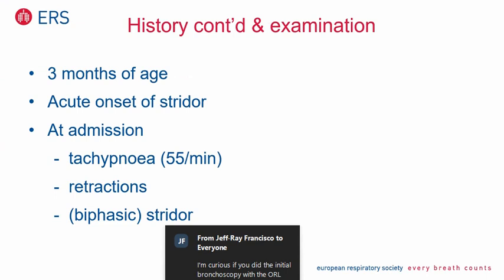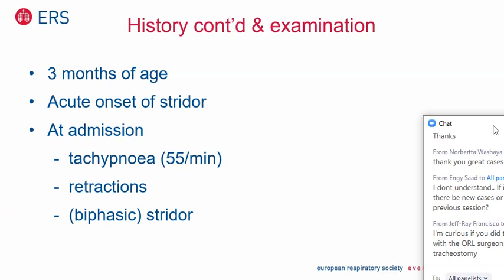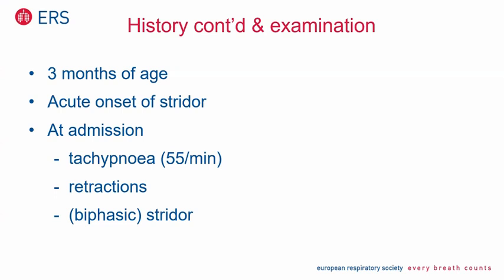After three months of age, the mother came back with the child because there had been acute onset of stridor. At admission, the child was mildly tachypneic with intercostal and jugular retractions. Again, this child also had stridor — biphasic stridor. What would be your most likely diagnosis here? Think about intubation, mechanical ventilation, and three months of age with stridor. You would think of subglottic stenosis — at least an acquired problem — because a congenital problem would manifest from the very beginning or with a respiratory tract infection, and there was no infection in this case.